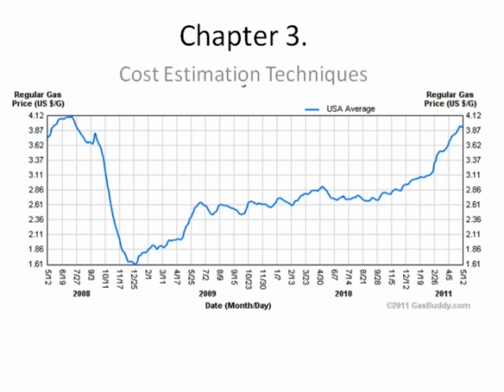In our previous lecture, we talked about the relationship between price and demand. When demand decreases, then price has to follow. Over time, of course, it's crept back up, and nowadays the price of gasoline is up around $4 a gallon.